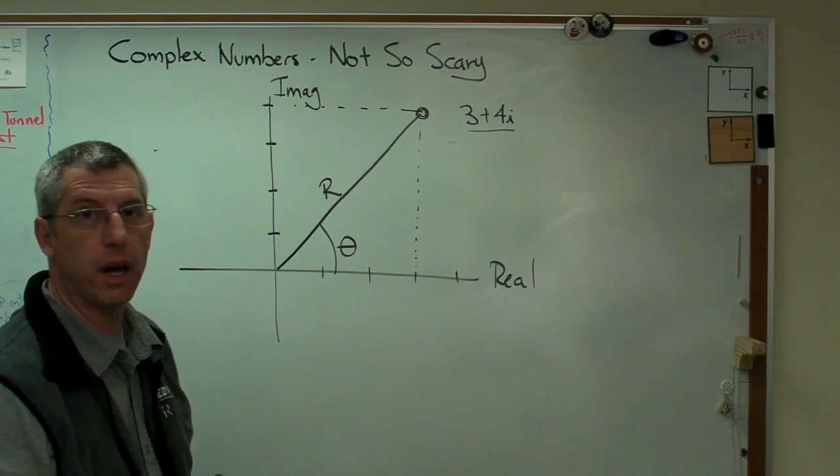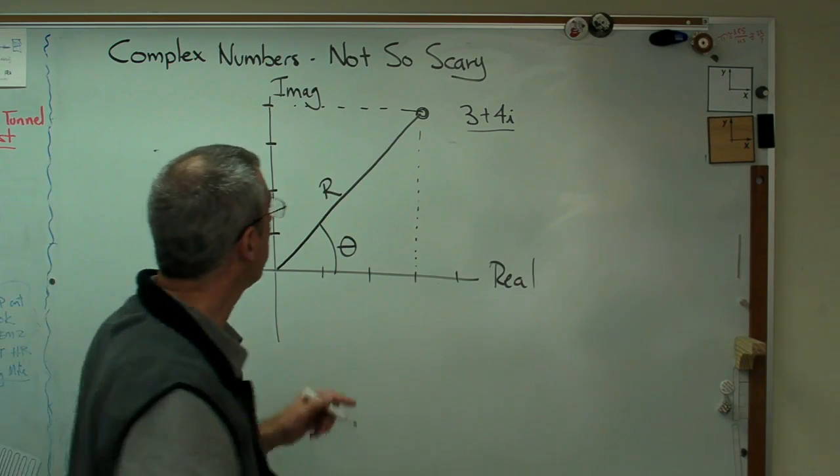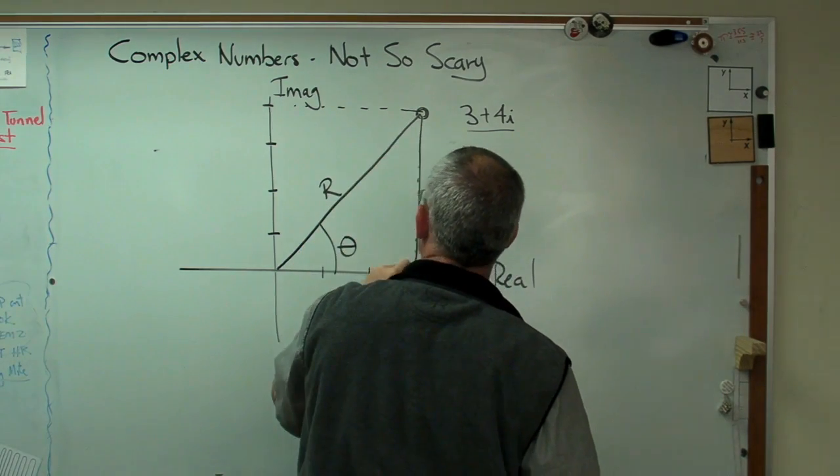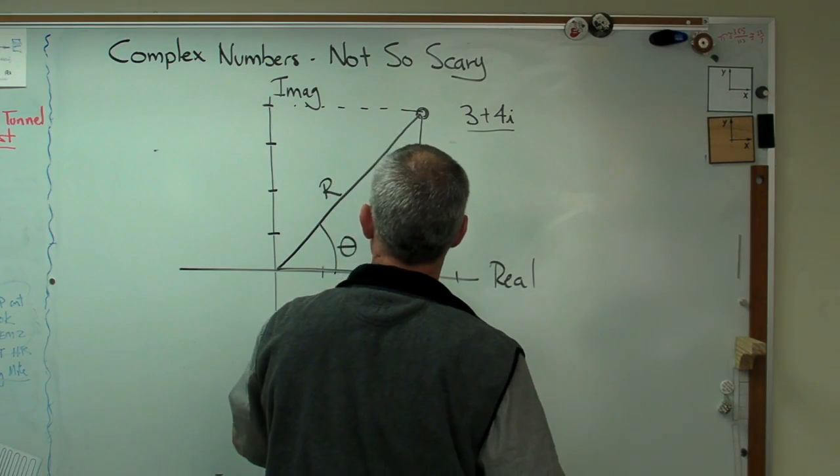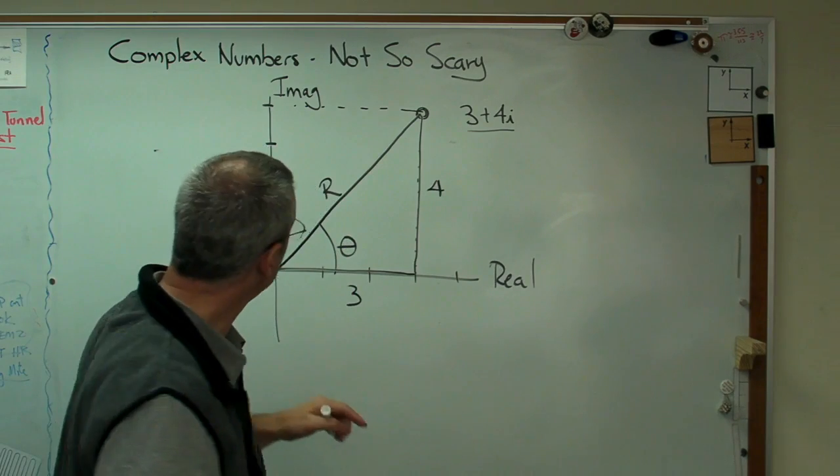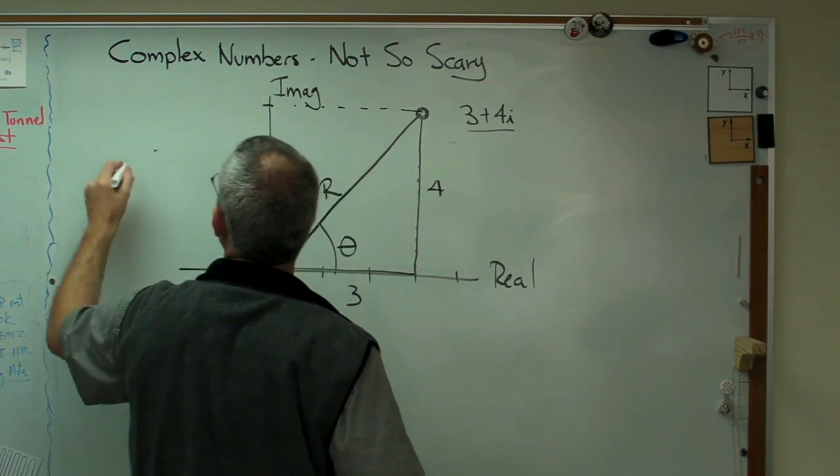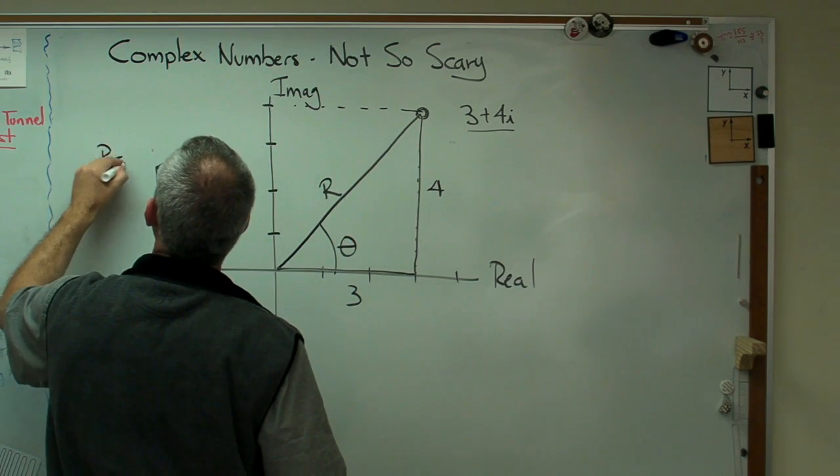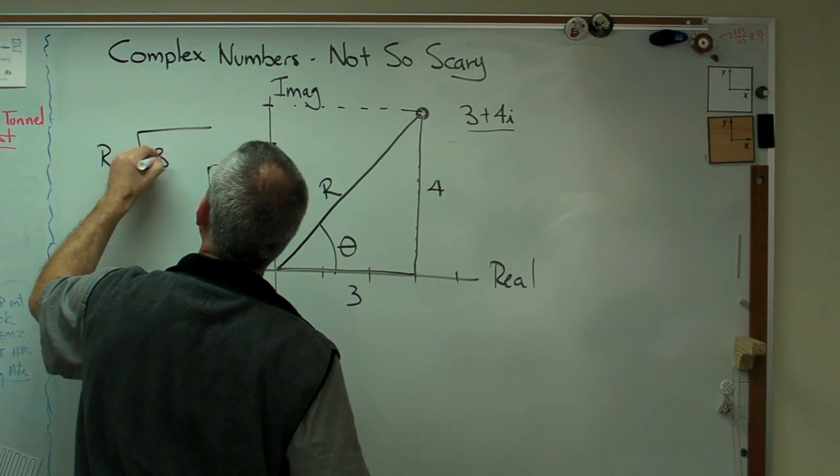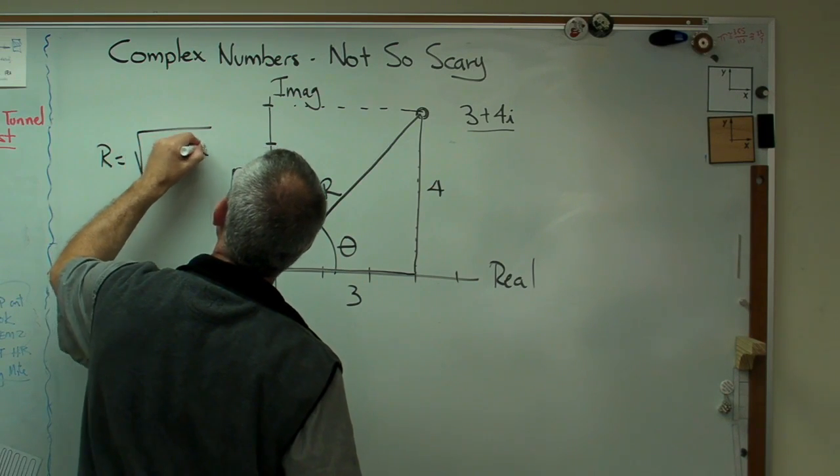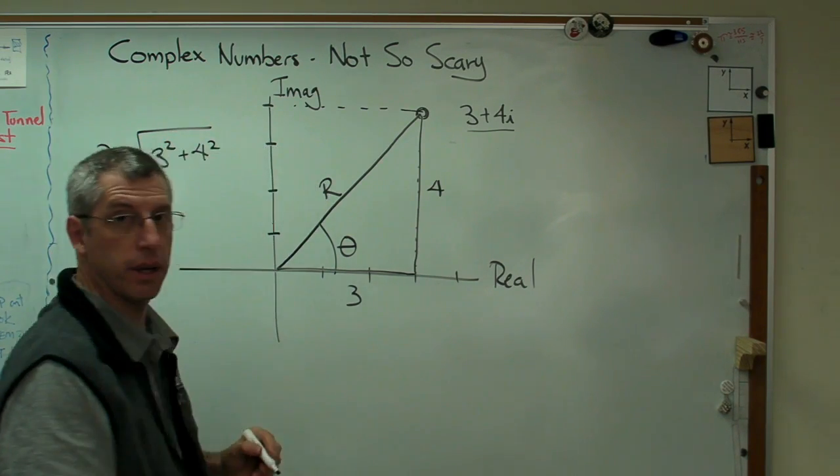Guys, this is looking an awful lot like the Pythagorean theorem. Well, the distance of that edge of this triangle, right there, is four and that one's three. So, let's see. That'll be, the radius right there is square root of 3 squared plus 4 squared.